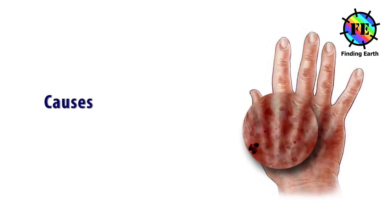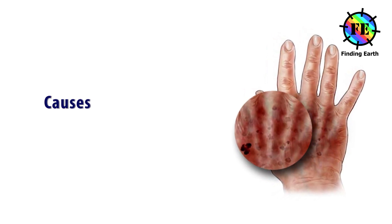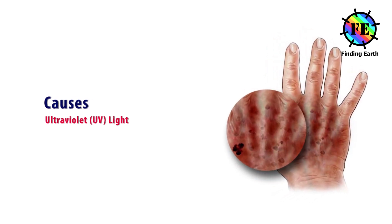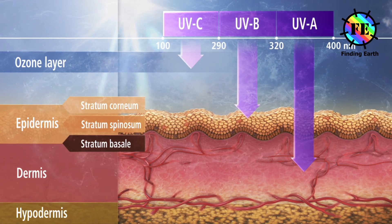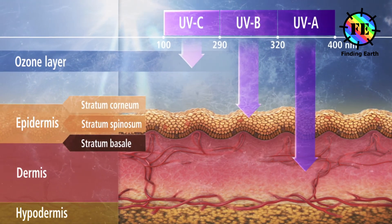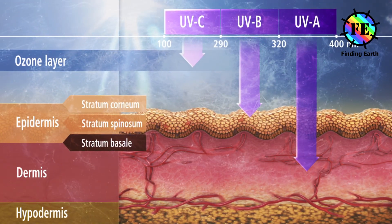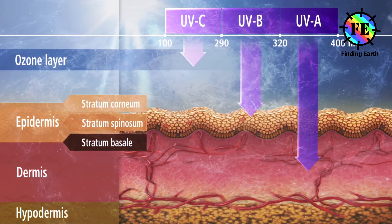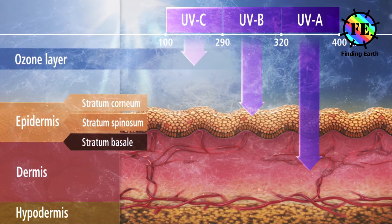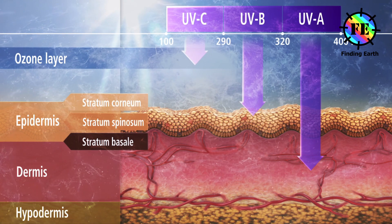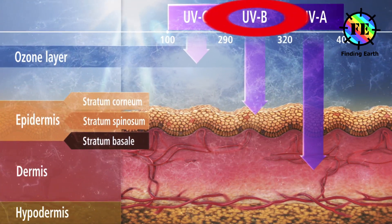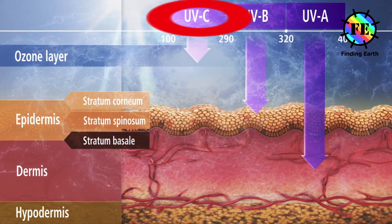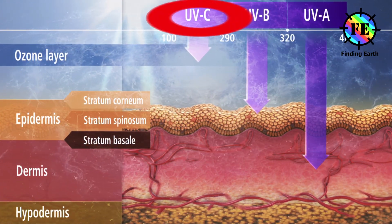Causes of skin cancer. Most skin cancer is caused by ultraviolet light damaging the DNA in skin cells. The main source of UV light is sunlight. Types of UV light include ultraviolet A, ultraviolet B, and ultraviolet C.